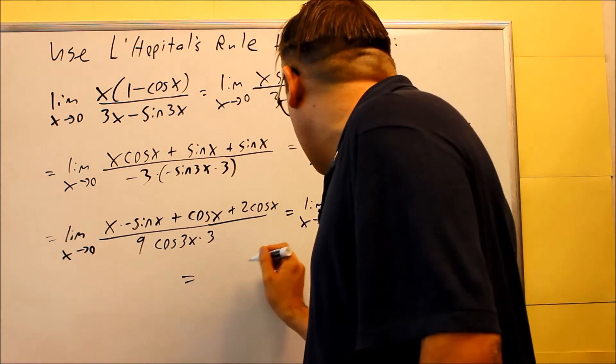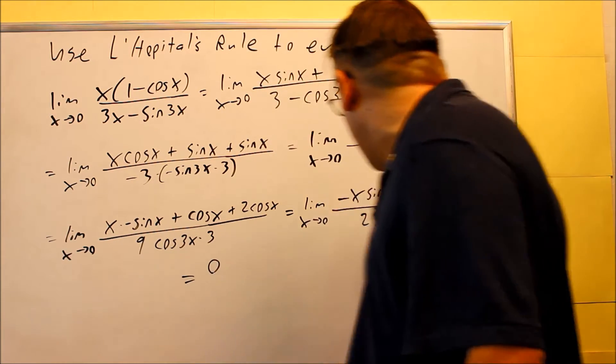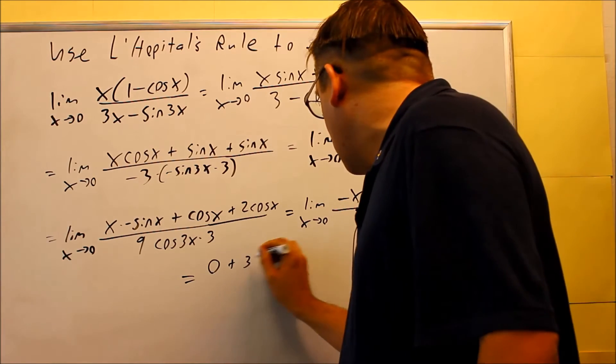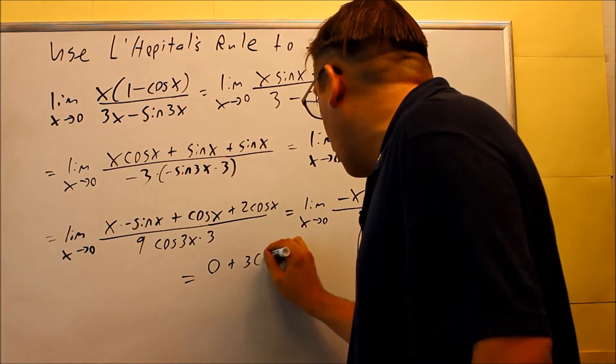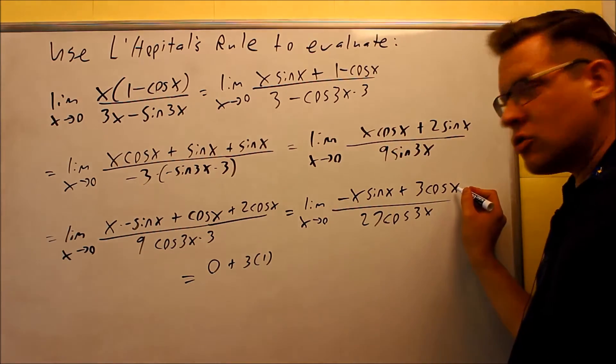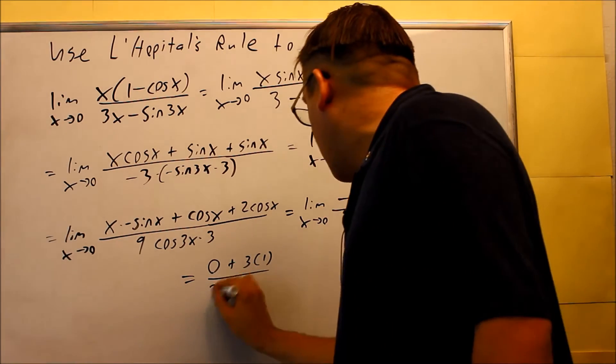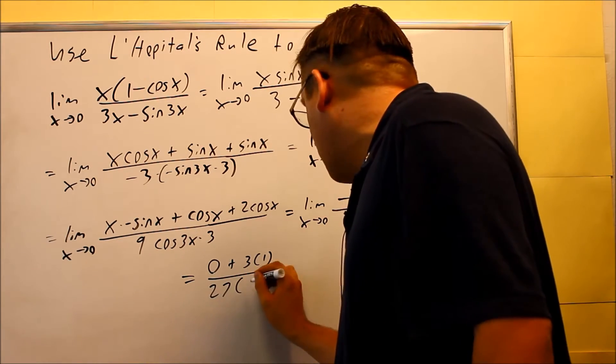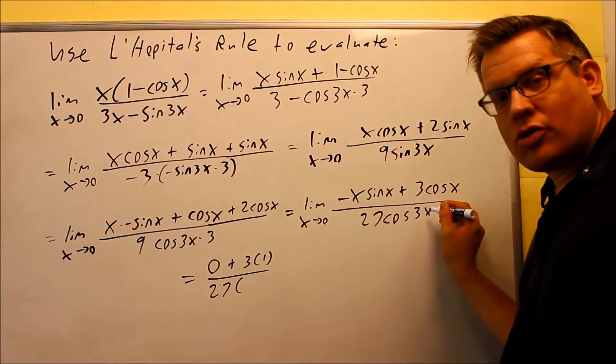Okay, so let's go ahead and work this out. We're going to get a 0 for this first piece, plus 3 times 1, because again, cosine of 0 is 1. Down below, you're going to have 27 times a cosine of 0, which is 1 again.